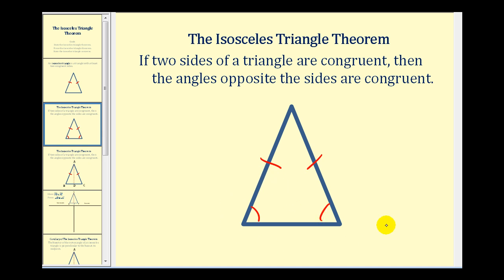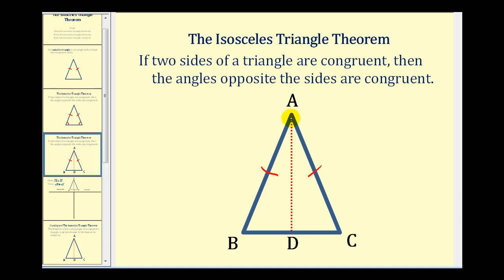The main goal of this video is to prove this theorem: if two sides of a triangle are congruent, then the angles opposite the sides would also be congruent. Now let's talk about our strategy. In order to prove this theorem, we're going to construct an angle bisector, as we see here in red.